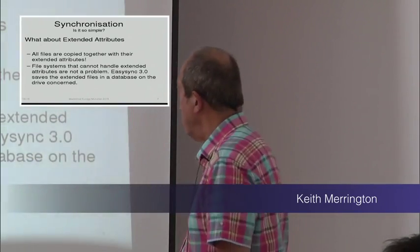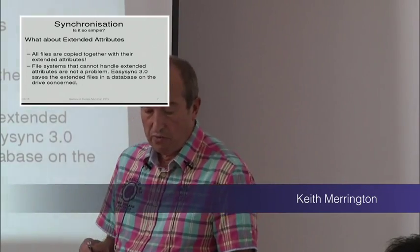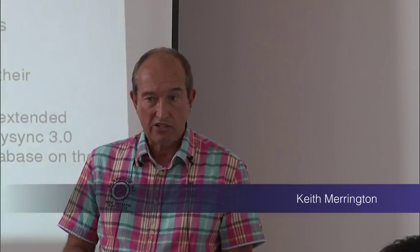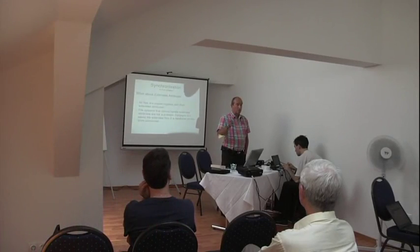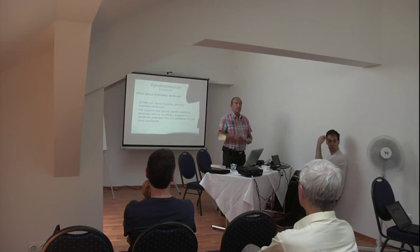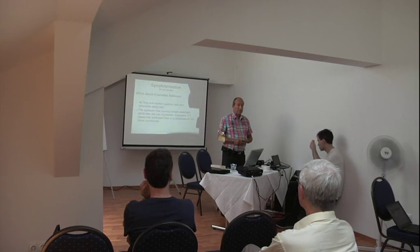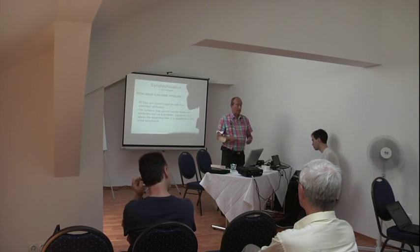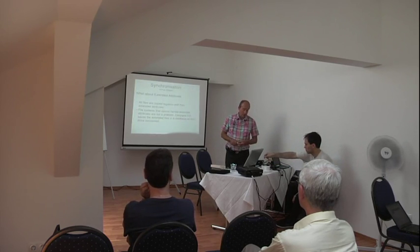And then you have a problem. With 3.0 I've added a function which basically creates a database in the file system that does not directly support extended attributes, and the extended attributes are stored in that database. Why did I do this? I have a NAS at home which runs on Linux. I can copy files to it and read it with Samba perfectly, but it doesn't handle extended attributes. I know that in the Linux kernel you can recompile such that it does support extended attributes, but this is a NAS with firmware which you can't really change. So I make a database — and that's one of the main differences with version 3.0.